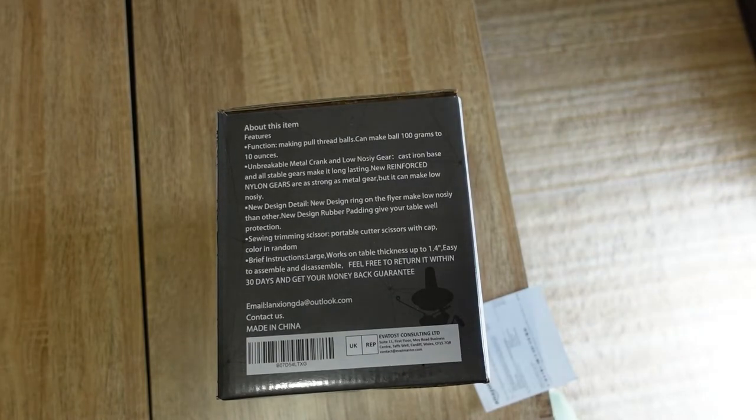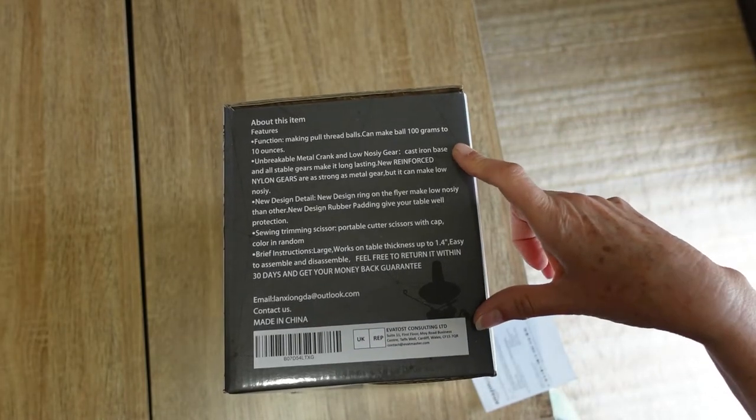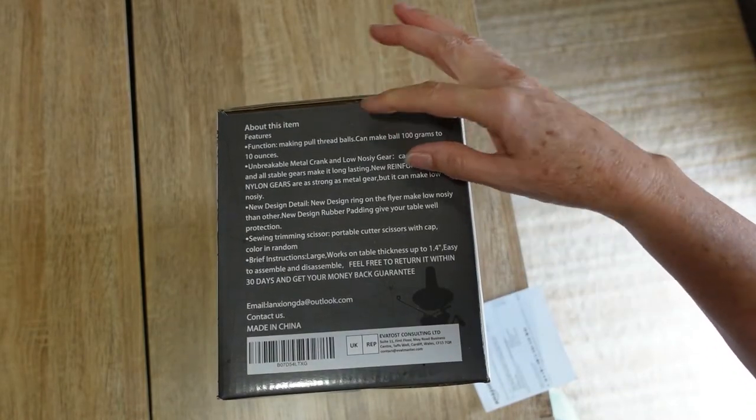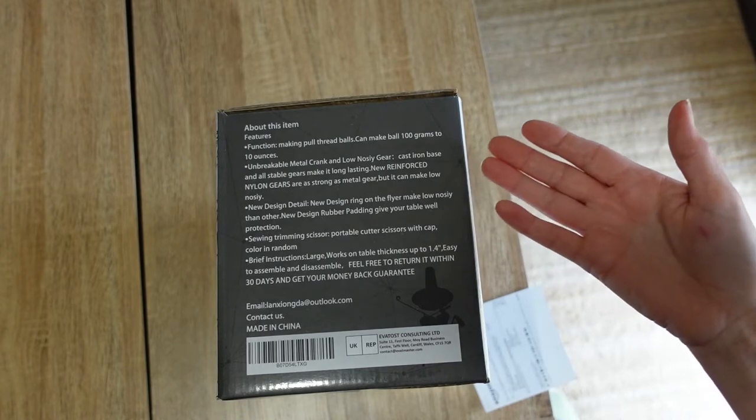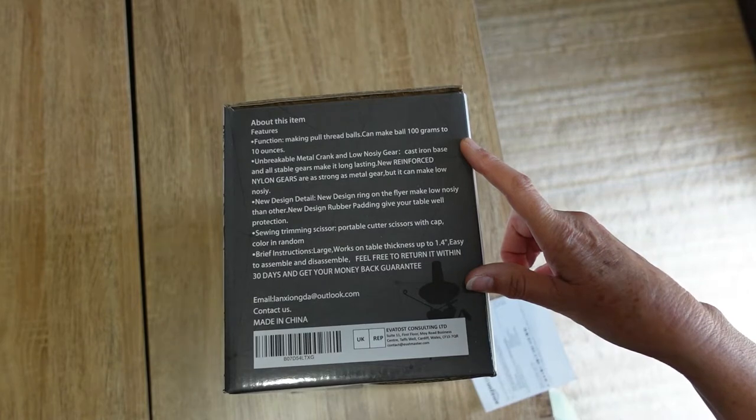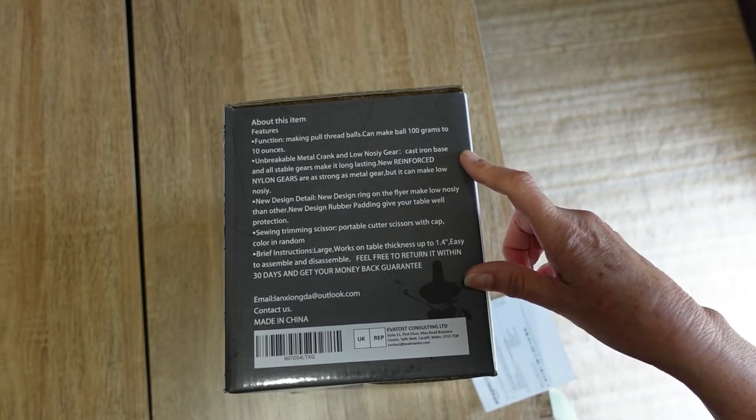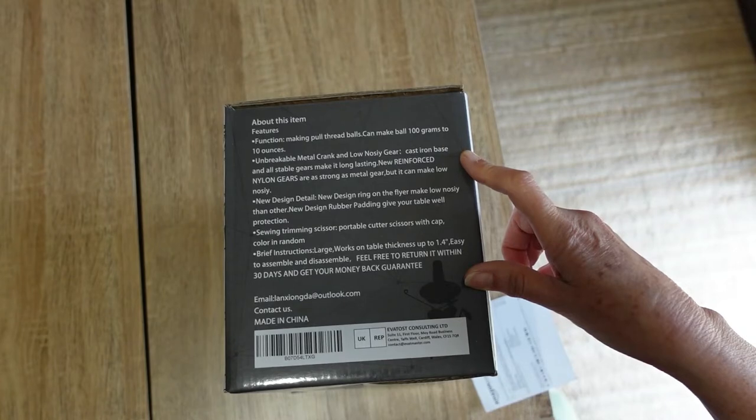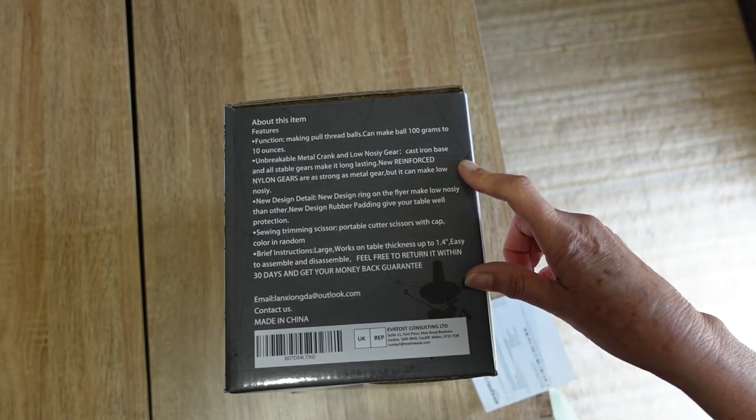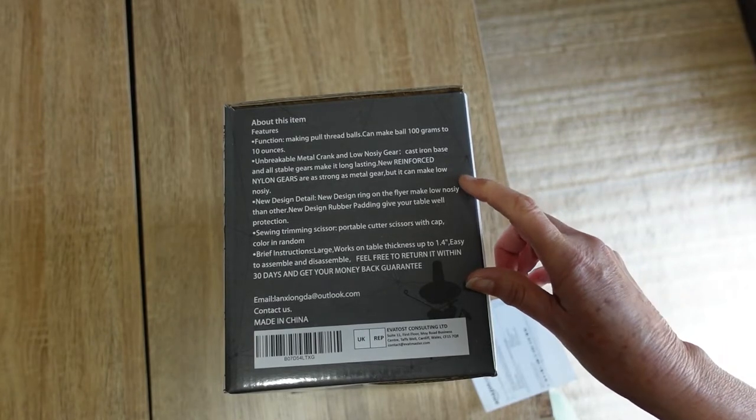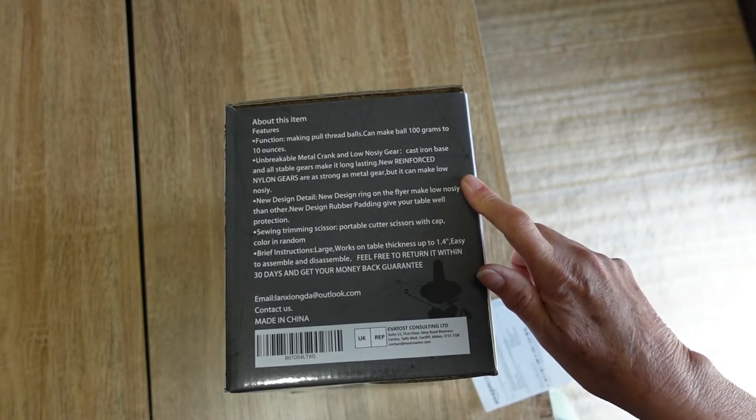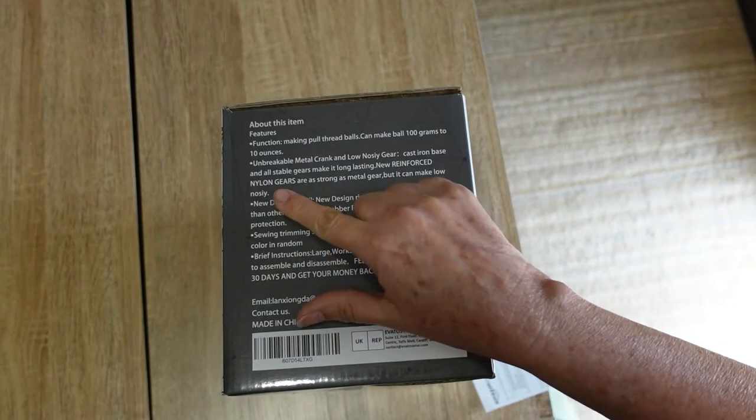On the box here, it is telling me about the function. The English is not absolutely fantastic. It says, about this item features function: making pull thread balls, can make ball 100 grams to 10 ounces, unbreakable metal crank and low noisy gear, cast iron base and all stable gears make it long lasting. Reinforced nylon gears are as strong as metal gear, but it can make low noisy.